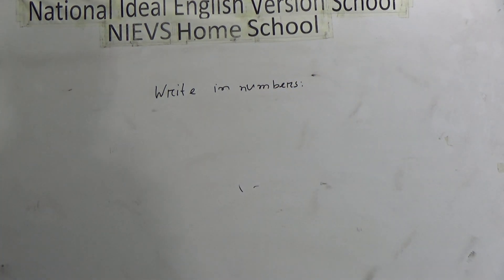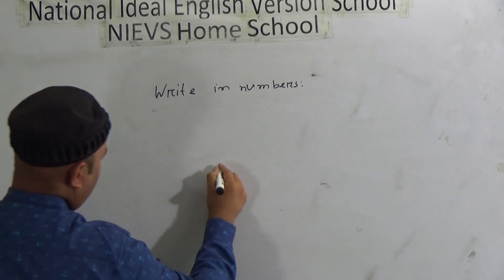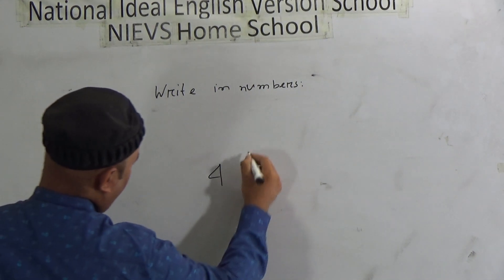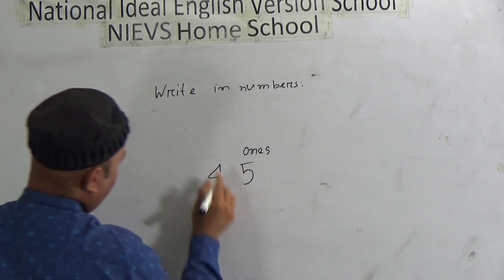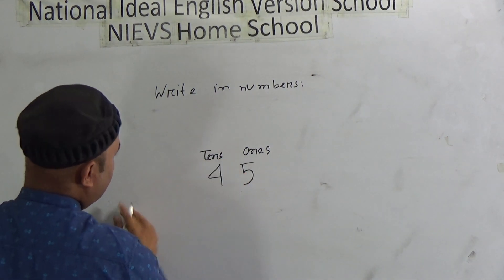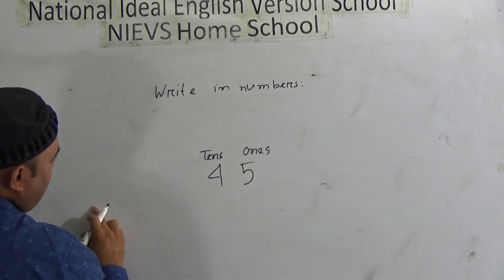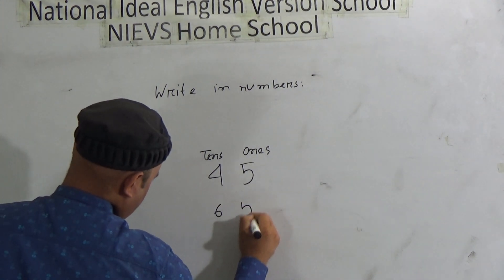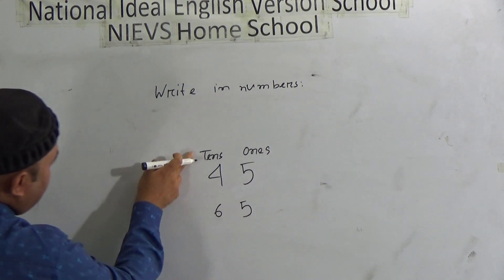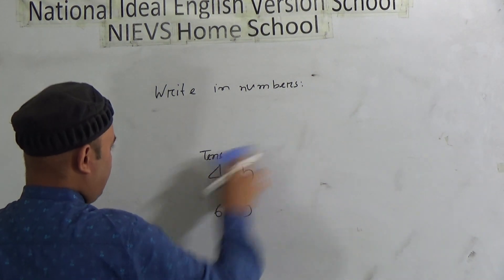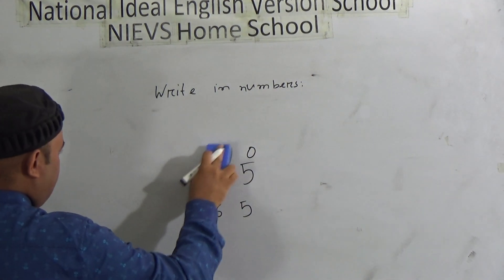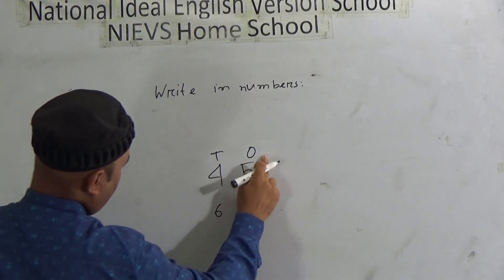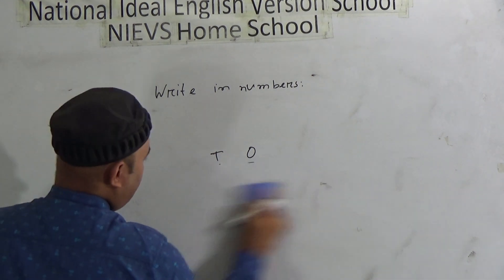First of all, you have to know the place of a number. So look here, if I write 4 and 5, it makes 45. 5 is here in ones place and 4 is here in tens place. If I write 65, also 5 is in ones place and 6 in tens place. In short, ones place is called O and tens place is called T. Then again, if you write 39, 9 is here in ones place.